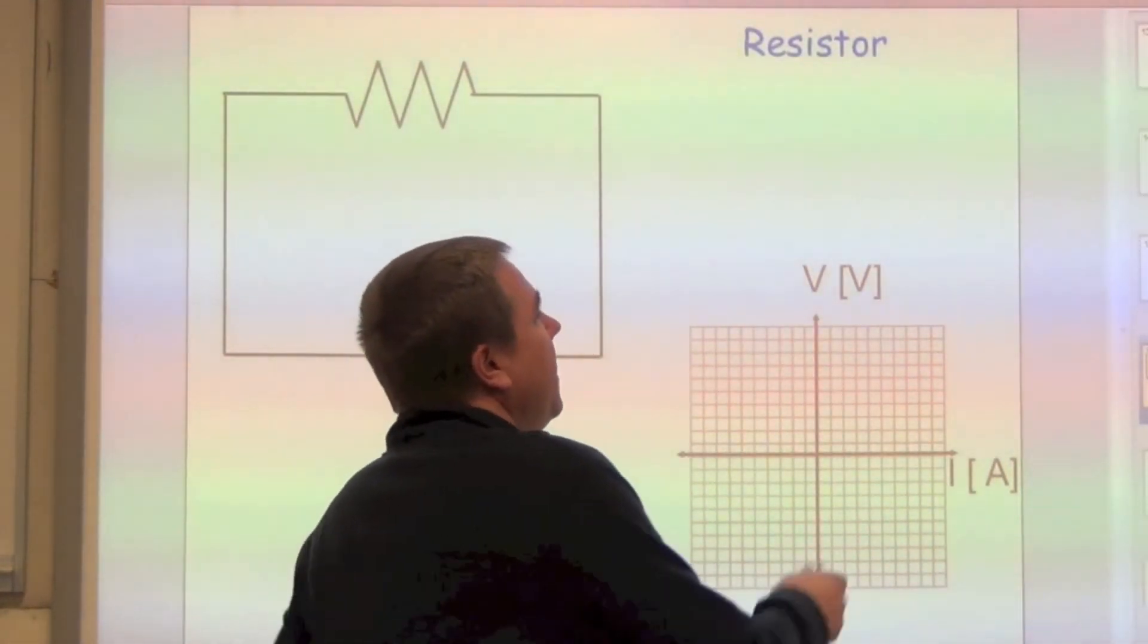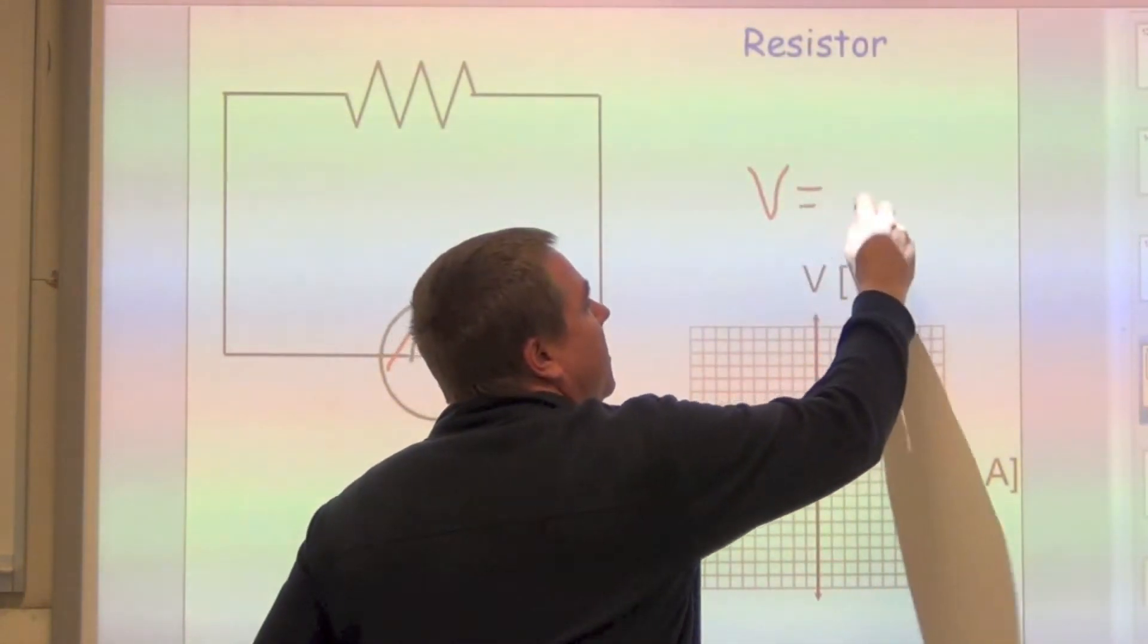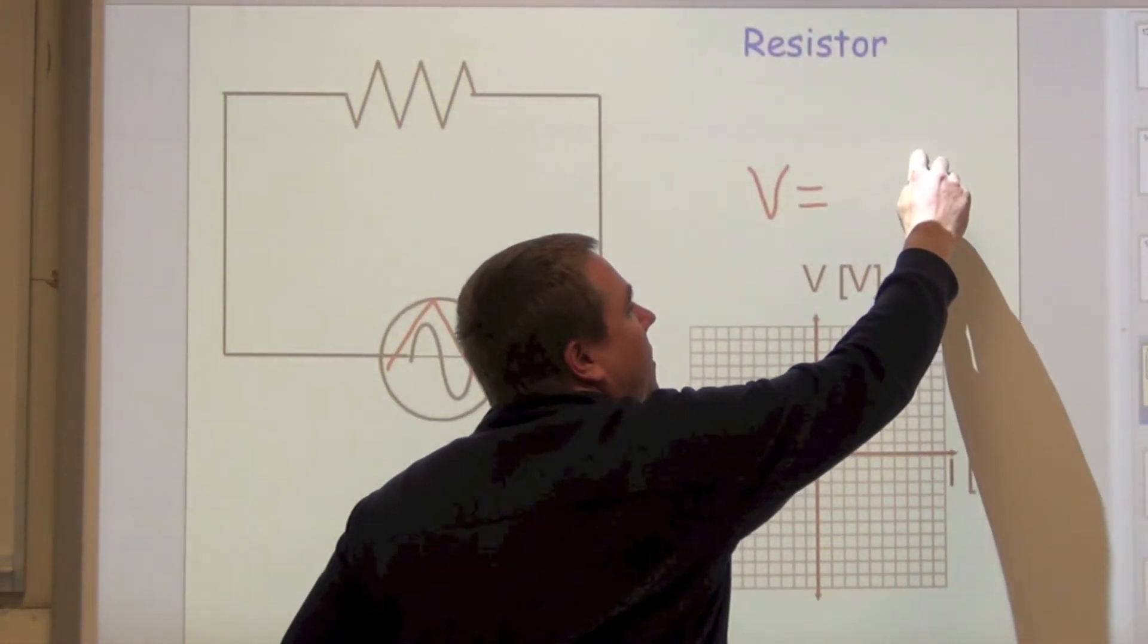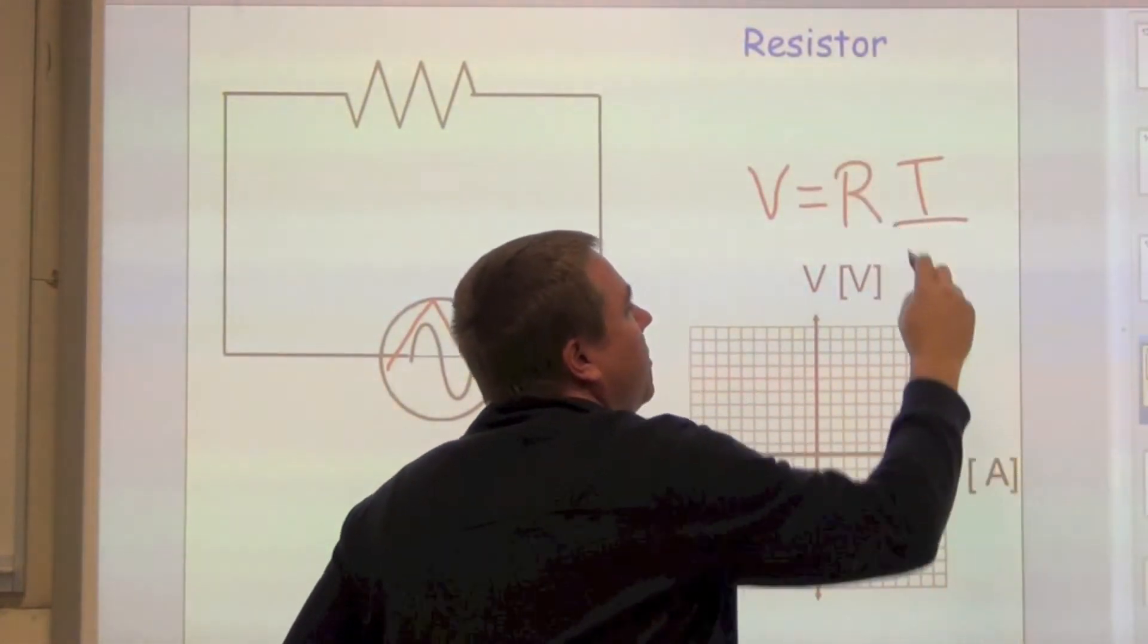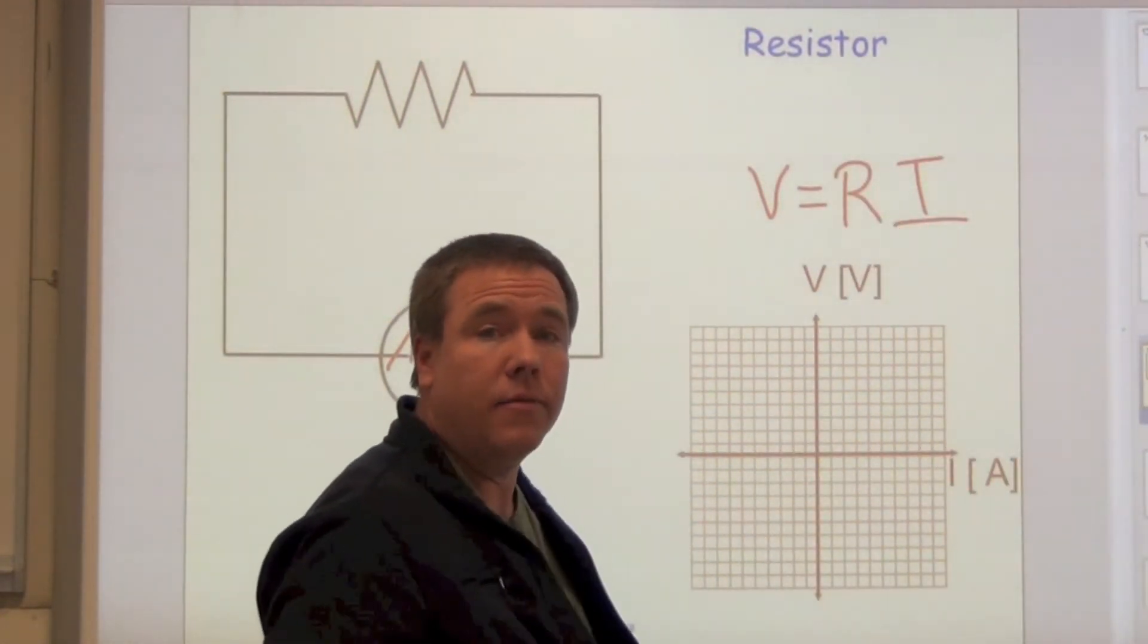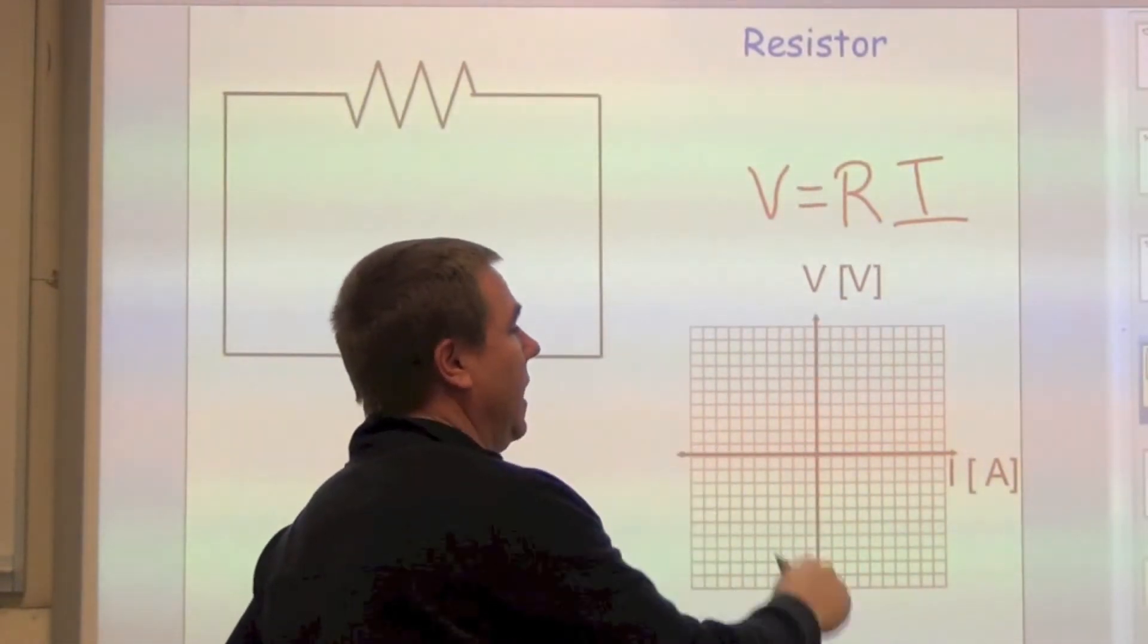Remember that if we plot voltage is equal to some voltage on the Y and current on the X, the slope should be the resistance from Ohm's law. That's a natural fallout.